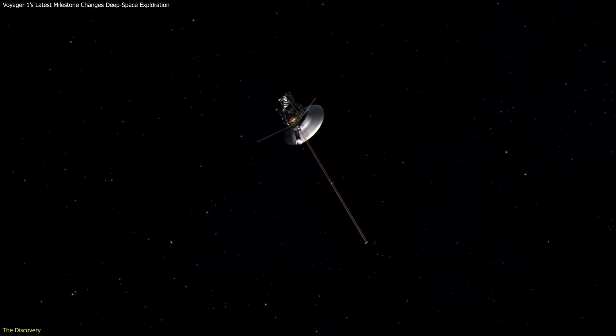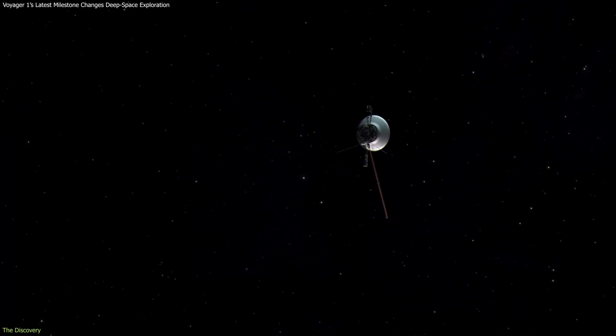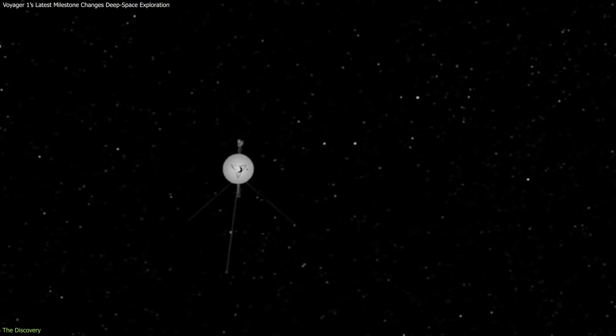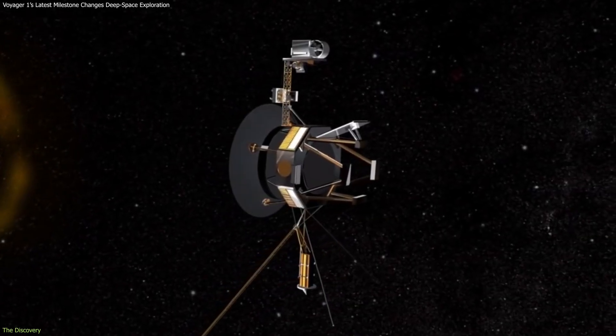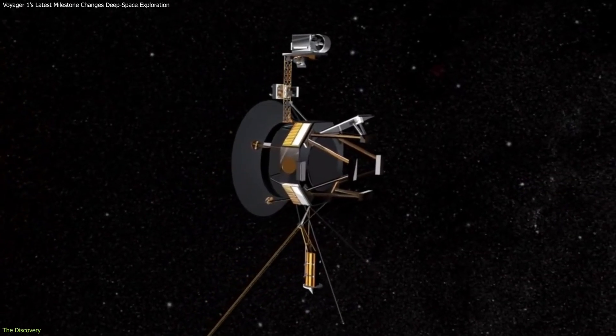Based on its current speed of about 38,000 miles per hour, Voyager will cross this distance in November 2026, becoming the first human-made object to reach it while still operating.